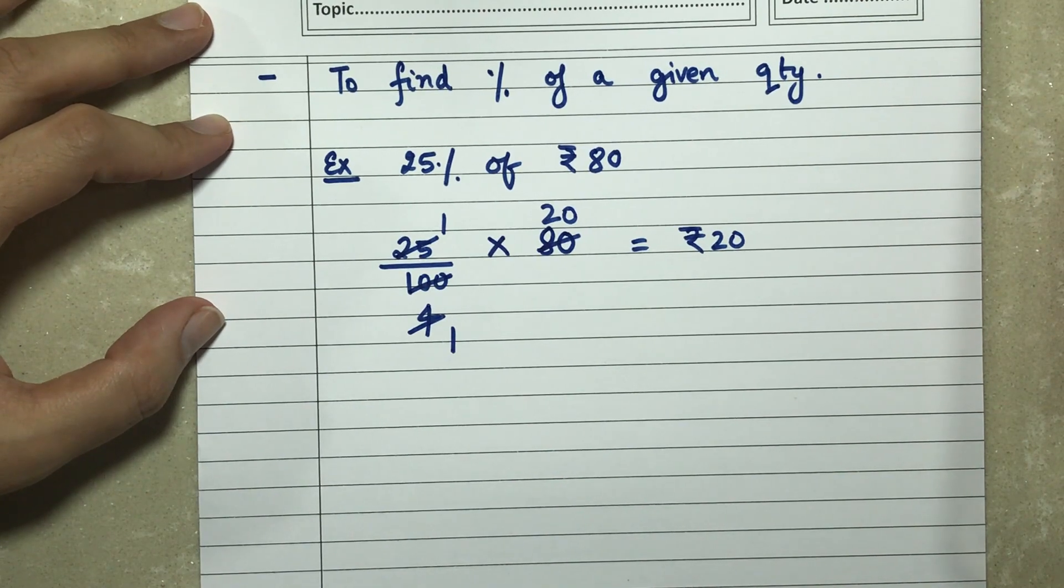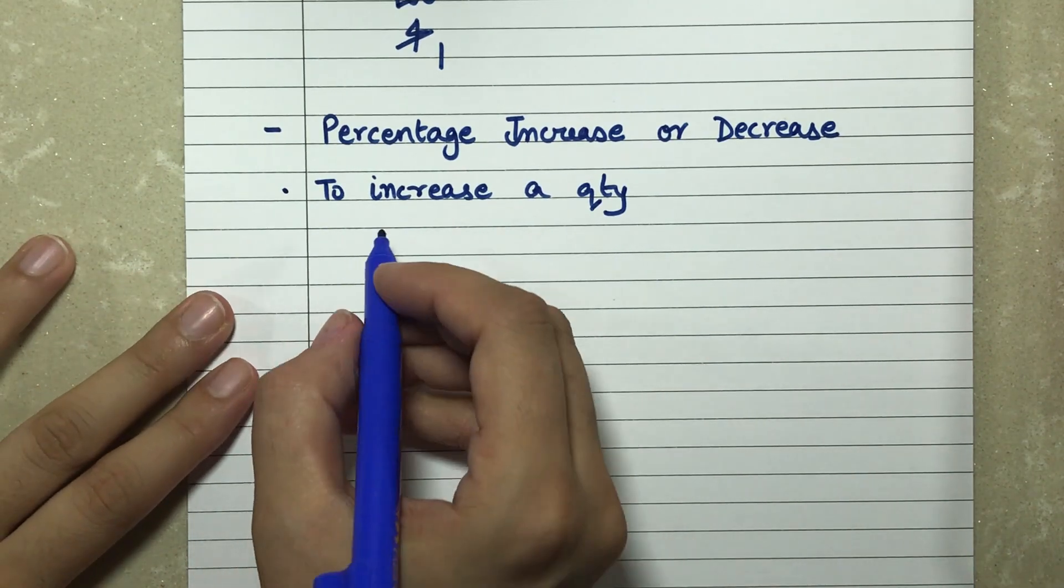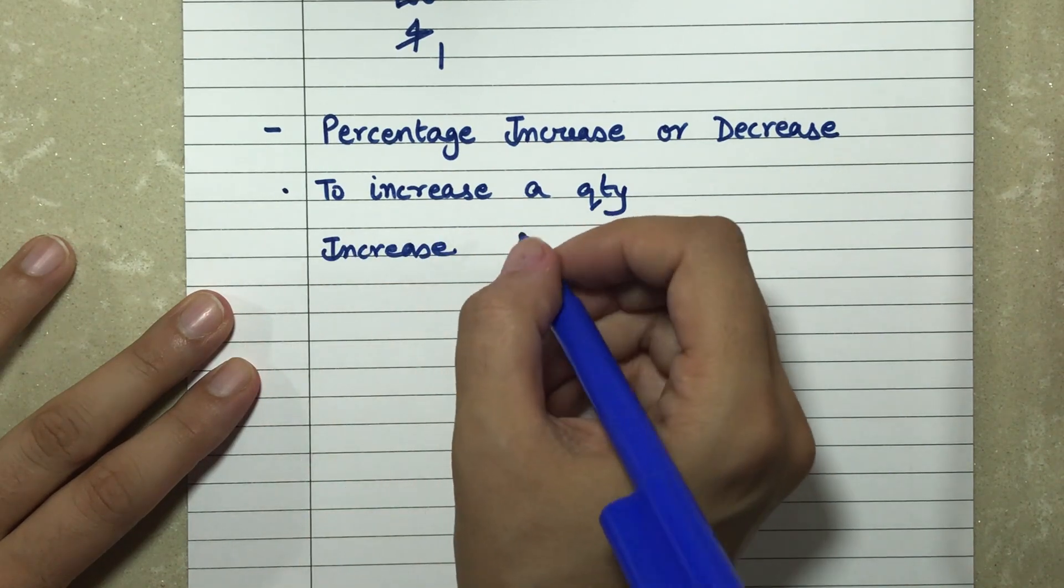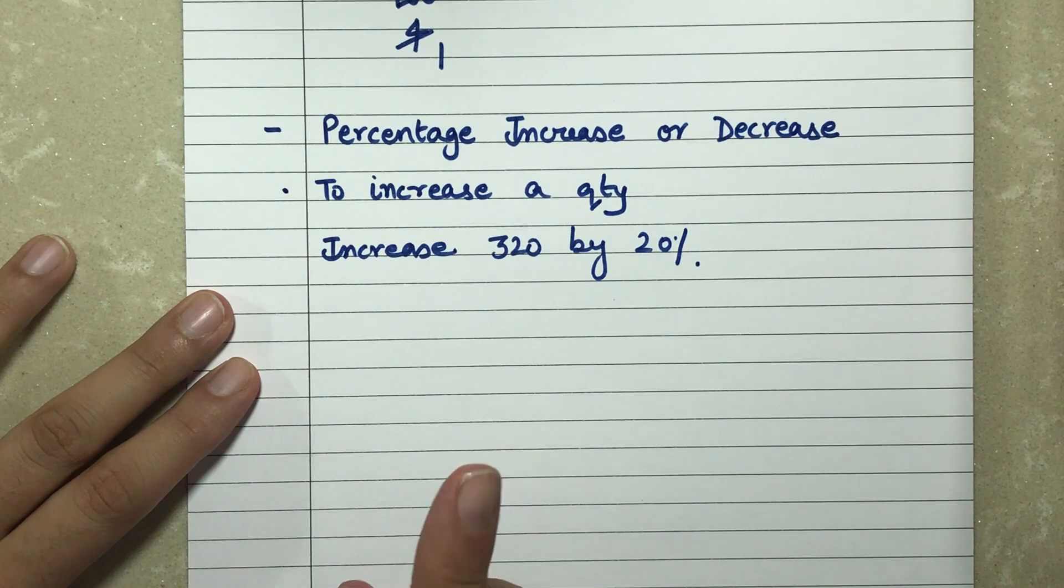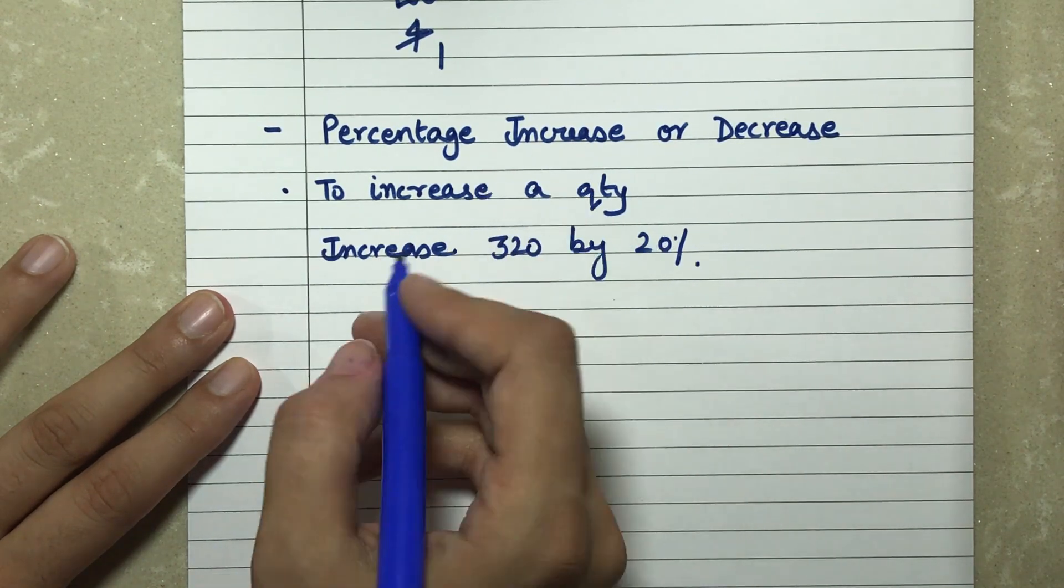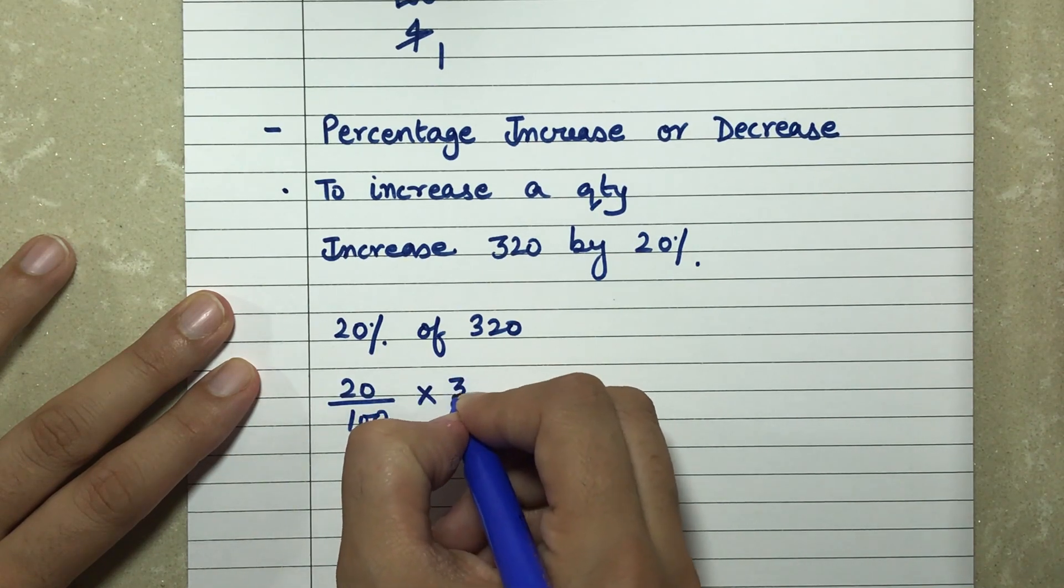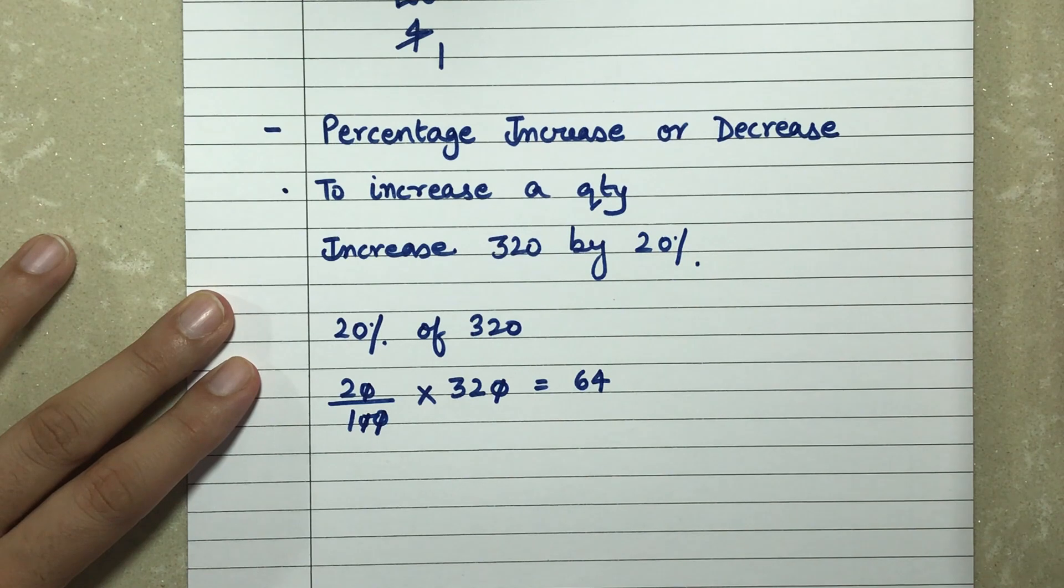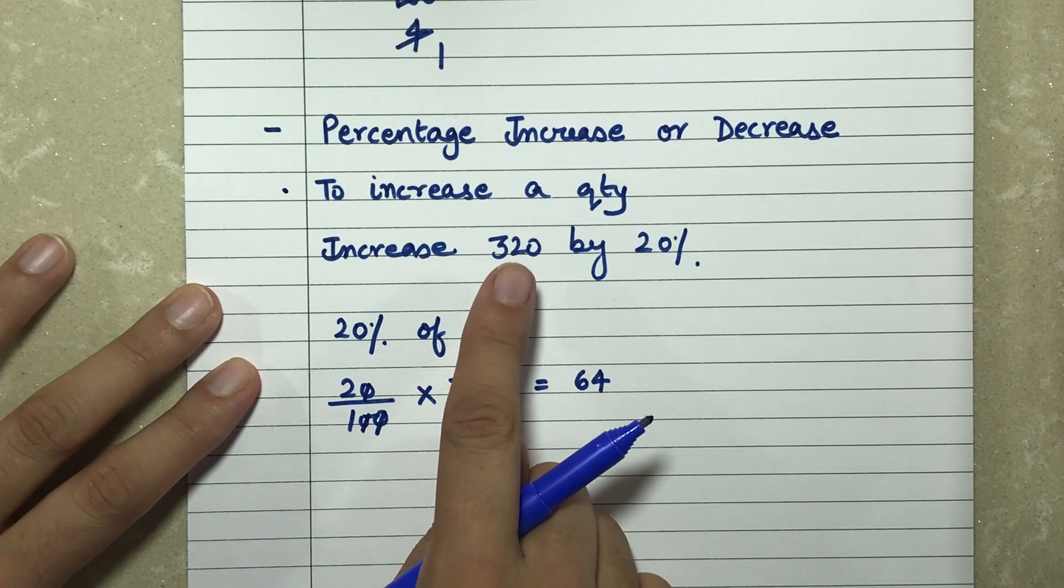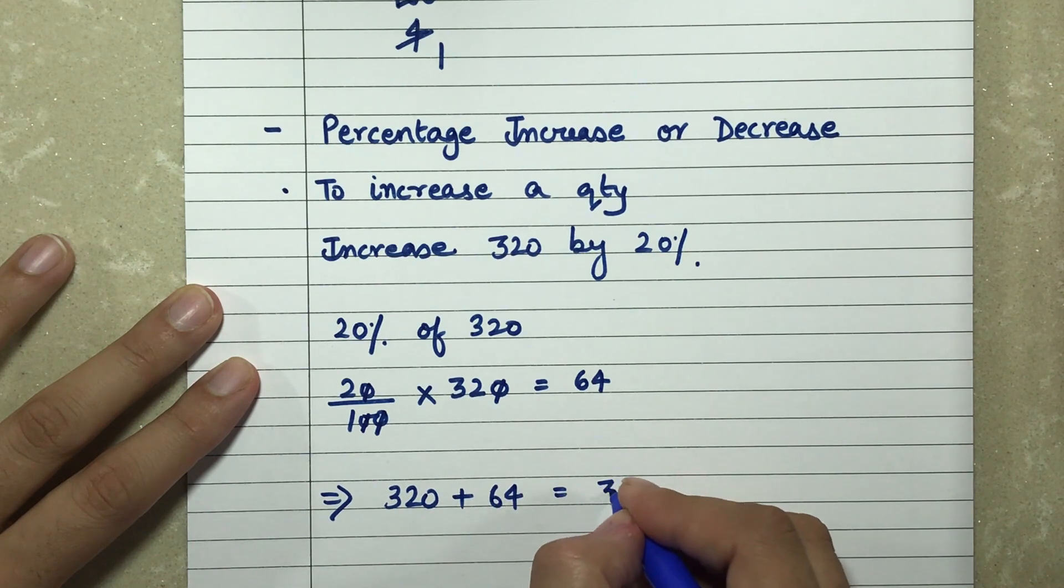Next, if we have to look after percentage increase or decrease in a certain quantity. The first one is when we require to increase a quantity. So if I am asked to increase 320 by 20%, what am I supposed to do? First, I will find how much is 20% of 320. So 20 upon 100 into 320, simply calculate this, this becomes 64. So now this is 20% of 320, and now I have to increase it. So my new value is going to be 320 plus 64, which becomes 384. So this is my new increased value of 320 when I increase it by 20%.